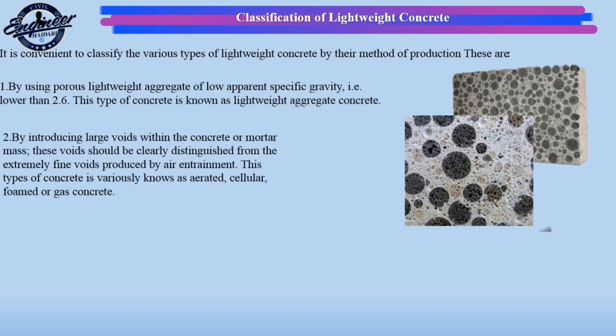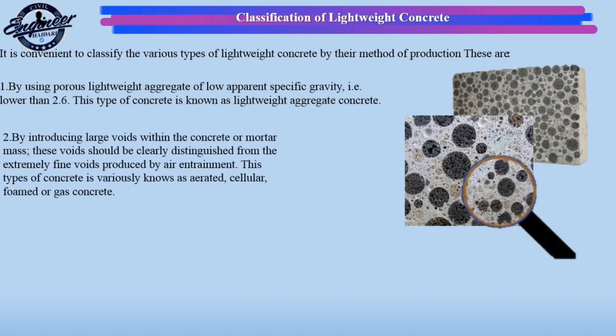The second method is by introducing large voids within the concrete or mortar mass. These voids should be clearly distinguished from the extremely fine voids produced by air entrainment. This type of concrete is variously known as aerated, cellular, foamed, or gas concrete.